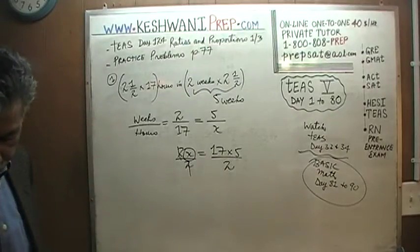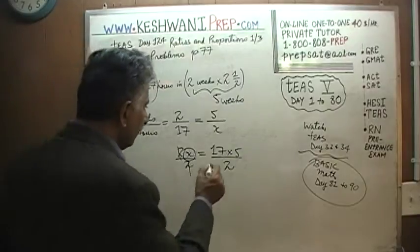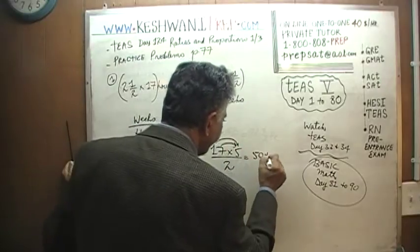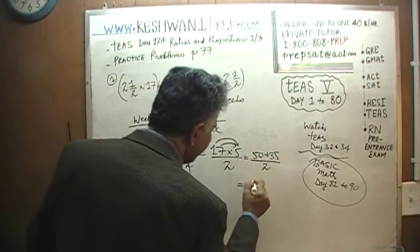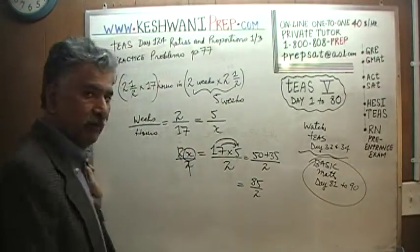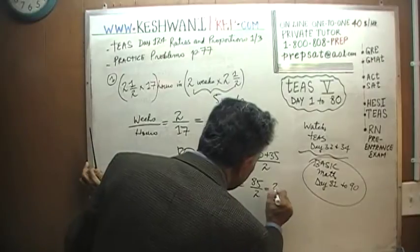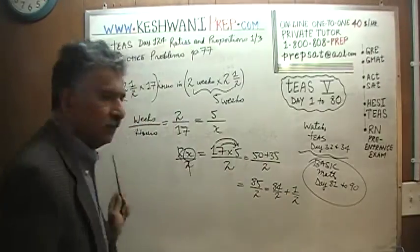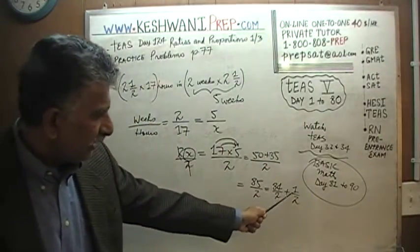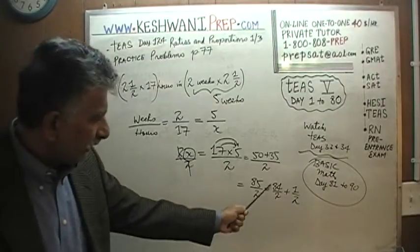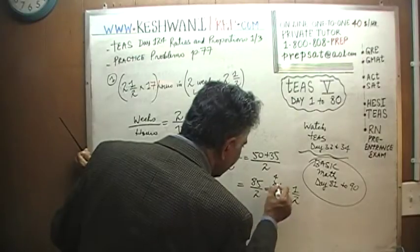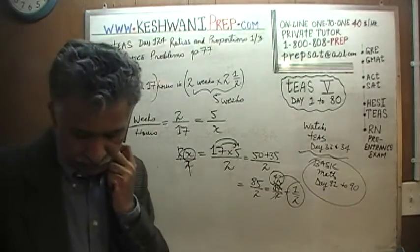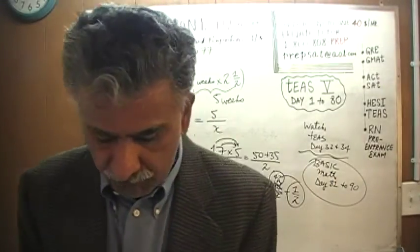Let's find out what 17 times 5 is. We know 10 times 5 is 50, and 7 times 5 is 35, so it's 50 plus 35, that's 85 over 2. 85 over 2: 85 halves are the same as 84 halves and another half. 84 divided by 2 is 42 — and there's your 42 and a half. So x equals 42 and a half hours, which is what he is going to practice if he continues at the same pace.